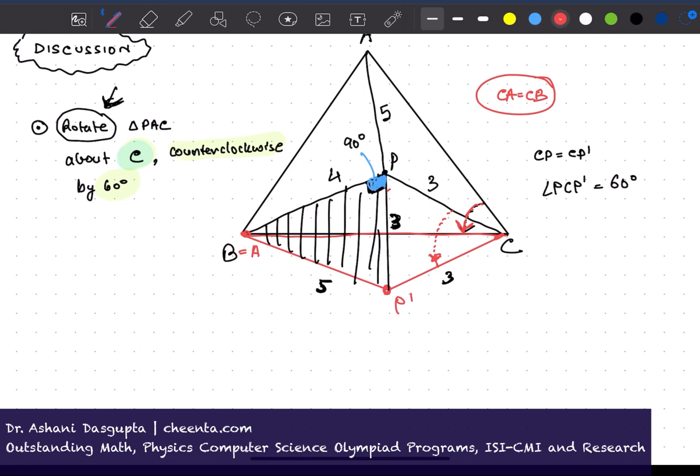And of course, the angle in red was 60 degrees because it's an equilateral triangle PCP prime. So total angle here is 150 degrees. Total angle here is 150 degrees.